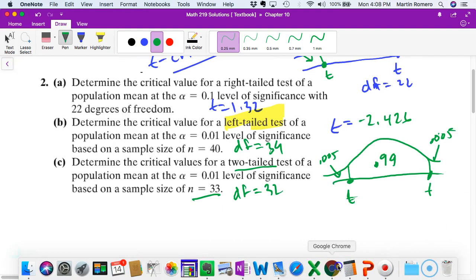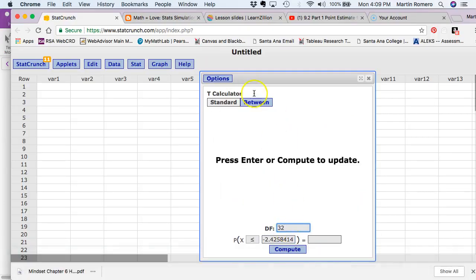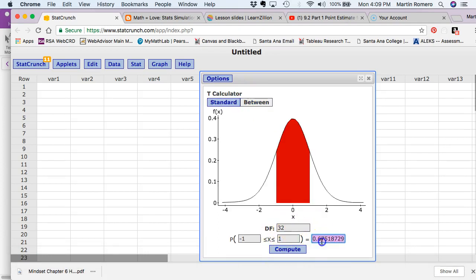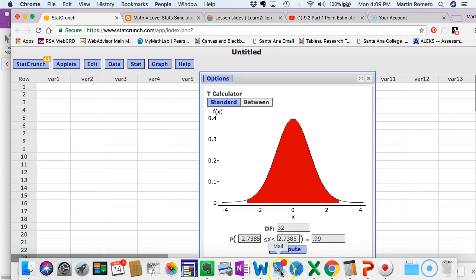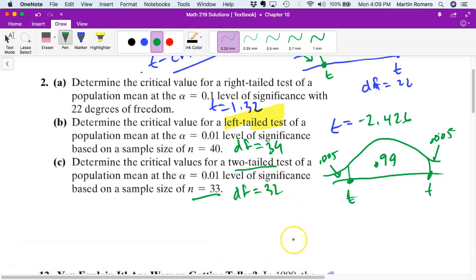So we're going to go to StatCrunch degrees of freedom 32. I'm going to put 32 in here. We can do a between because I'm looking for both sides. And in this case 0.99 would be my answer. And so you get negative 2.738 or negative 2.739 could be the answer also, plus or minus. You have both of them there. Let me double check. Is the degrees of freedom right? Yeah, degrees of freedom 32.